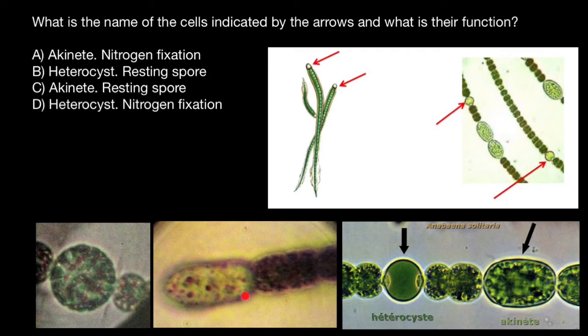So, for example, if you take a look here, you would be able to tell if it is akinete or heterocyte. Because, as you see, they don't have this plaques, which heterocyte has.